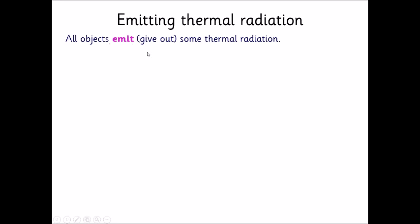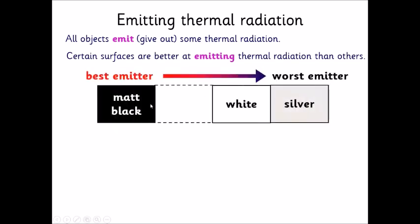So if we summarize that, all objects emit some radiation, but certain surfaces are better at emitting radiation than others. And matte black is the best at emitting radiation, down to a shiny silver one, which is the worst emitter.